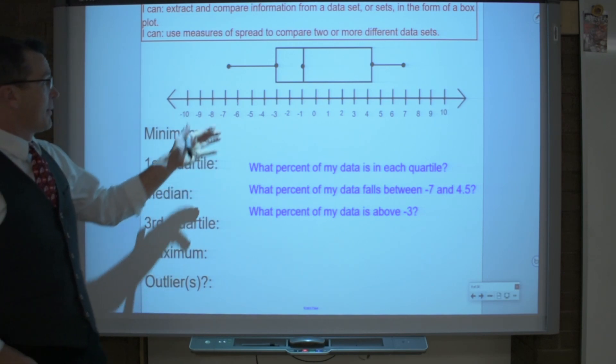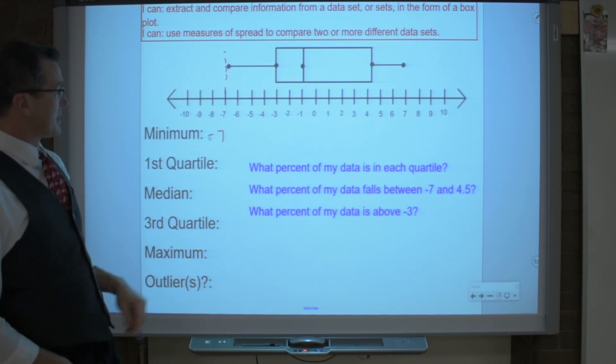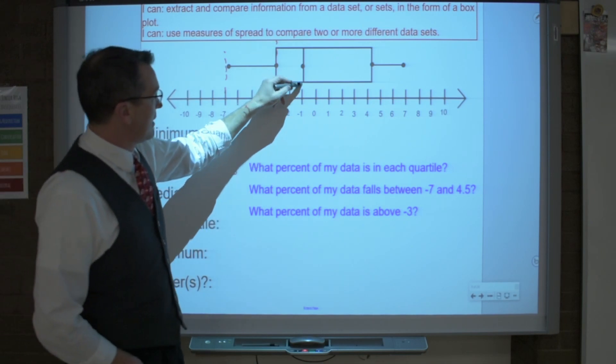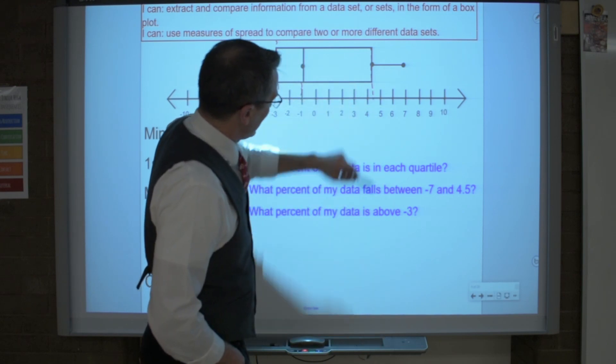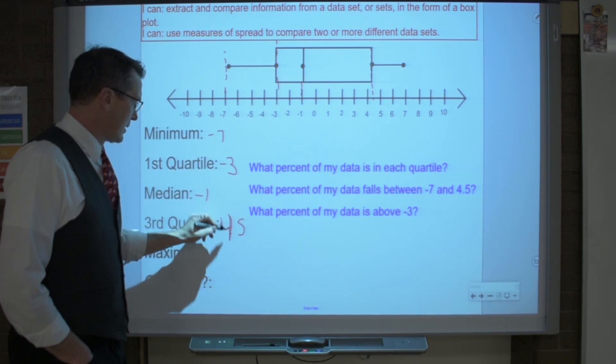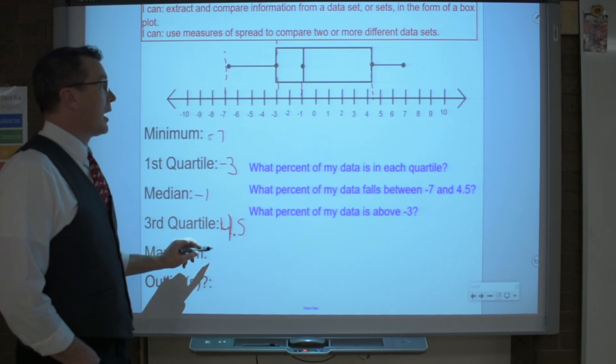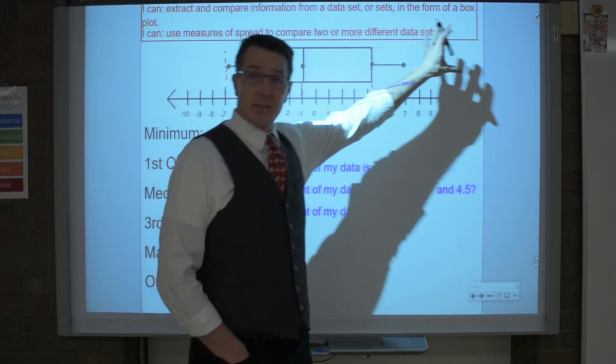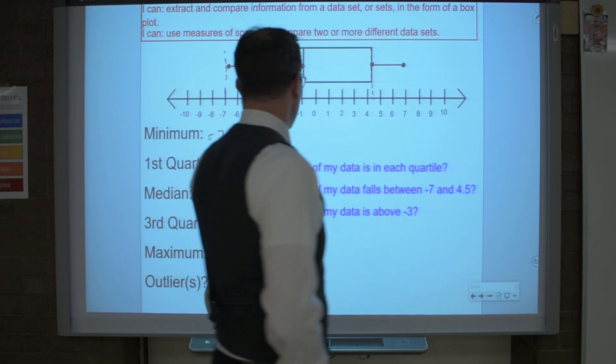First off, we're going to extract information. You might see something on a quiz. It says, what's the minimum? I look at my graph and say, oh, my graph, it's negative 7. And then my first quartile, Q1, that's negative 3. Easy peasy. My median is negative 1. This one's a little bit difficult because it's not really there. You can just say like 4.5. Keep it simple. Graphs aren't perfect. We'll try our best. And then our maximum is a 7. And then we ask, is there an outlier? Well, I don't see anything outside of the data here. So I'd say no to the outliers.